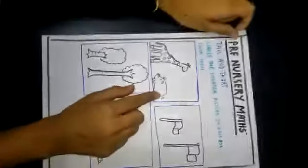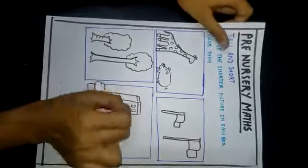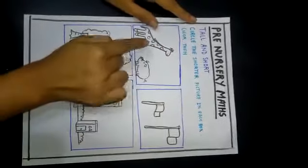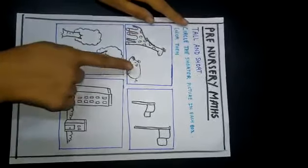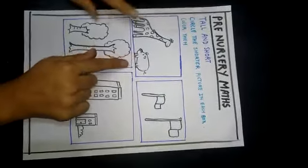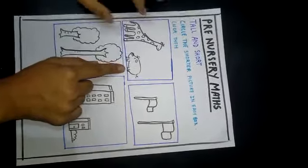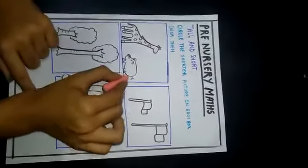Let's circle the shortest picture in each box and color them. Here are two animals - one is a giraffe and one is a piggy. We all know that the giraffe is the tallest animal and the piggy is small, so let's circle the piggy.